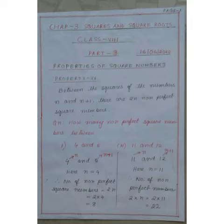Question number 2. How many non-perfect square numbers between 11 and 12? 11 is n. So number of non-perfect numbers will be 2×11 = 22.